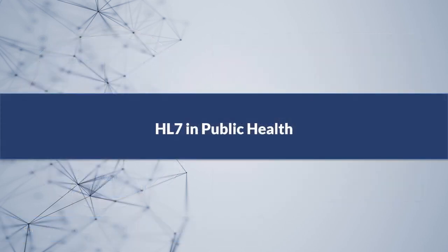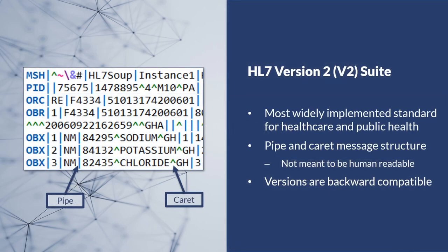Now that we've learned about some history and background of HL7, let's discuss different versions of HL7 standards and how they are used in public health. Arguably the most widely implemented standard for healthcare in the world is the HL7 version 2 suite. The first HL7 standard was published in 1987, with updated versions being released as recently as 2019. Typically, when people think of HL7, they think of the pipe and carrot structure of the V2 message, like the sample message you see on the screen. While this structure is not meant to be human readable, informaticians must be able to understand and interpret this structure in order to troubleshoot V2 messages. Our future trainings will take a deep dive into the structure and content of V2 messages.